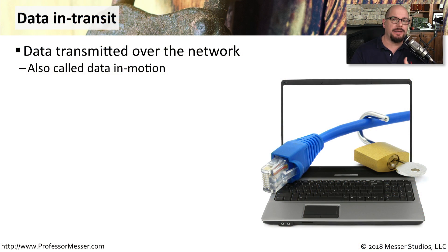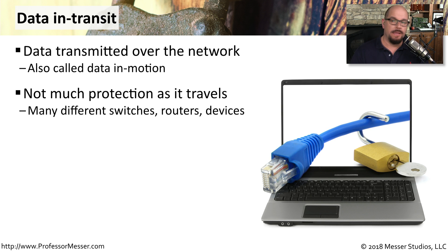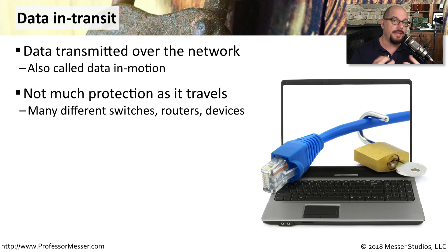Data in transit is any data that we're sending across the network. You may also hear this referred to as data in motion. By itself, there's not much protection of this data — it's going through many different points, passing through switches, routers, and other devices to get to where it needs to go. And in each one of those locations is an opportunity for someone to capture that data and see what's inside.